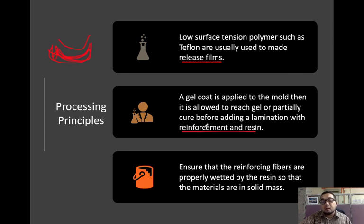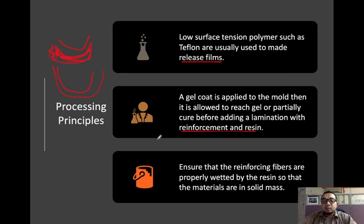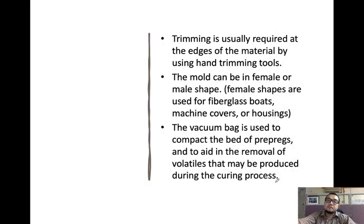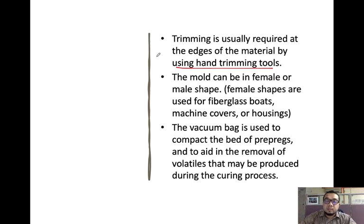Before placing the product, we first apply gel coat onto the mold surface to facilitate easy removal. We must ensure that reinforcing fibers are properly wetted by the resin so the materials form a solid mass. After curing and demolding, trimming is usually required at the edges using hand trimming tools. The mold can be in female or male form — female shapes are used for fiberglass boards, machine covers, or housings. A vacuum bag is used to compact prepreg and to aid in the removal of volatiles produced during curing.